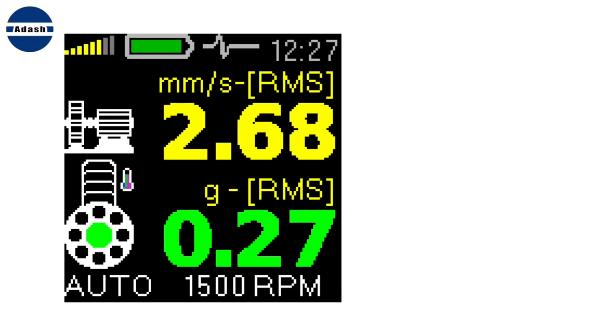You can take first reading once you prepare your points. Take two values from each point. The velocity value in millimeters per second or inch per second and the acceleration value in g. The velocity value is measured in frequency range from 10 to 1000 Hz. It gives us information about mechanical failures like unbalance, misalignment and looseness. The acceleration value is measured from 500 Hz to 16 kHz. It contains information about roller bearing condition.